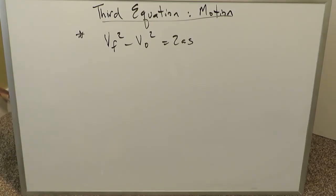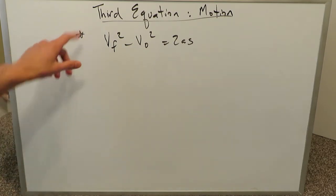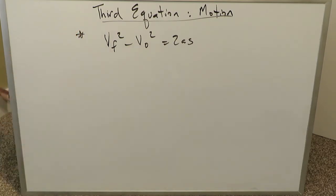We'll look at the algebraic derivation first, then the integral calculus procedure which involves rates of change. Now this is called the third equation, though in some textbooks you'll see it listed as the fourth equation, but generally it's considered the third equation of motion.